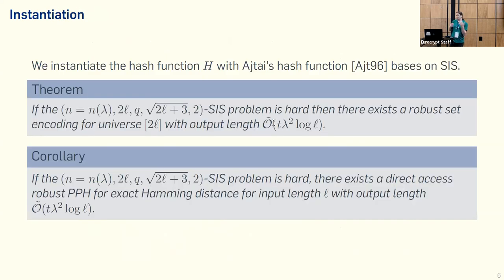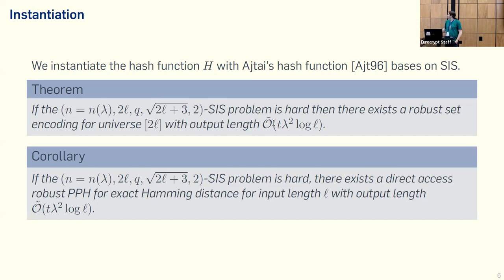So how do we instantiate this homomorphic collision-resistant hash function? We can instantiate this from Ajtai's hash function, and then we get a robust set encoding from the standard SIS instance. This has an output length of basically T times security parameter squared times logarithm of the input length. For large input length, this is a good compression. If the input length is short, it will not be compressing, because we square the security parameter, so the input length needs to be relatively long. From that we get the property-preserving hash function — we set the hash function to be the encoding and use the decoding for evaluation. It has the same output length as the robust set encoding.